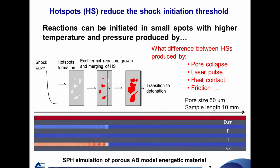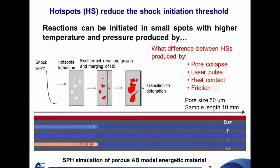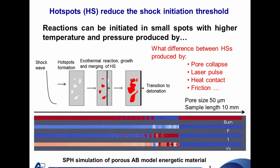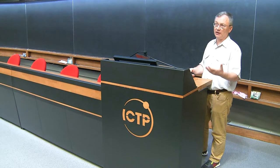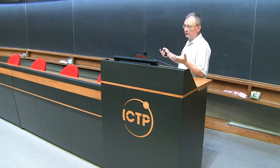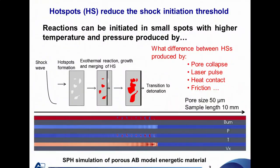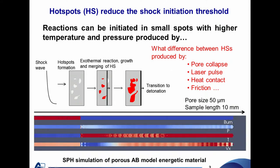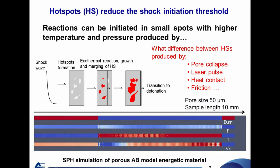Classification is important. For example, pore collapse will lead to one type of hot spot, but laser heating will provide another. Laser heating may produce a high-temperature hot spot, while pore collapse produces lower temperature but high pressure — quite different conditions. The critical condition for whether a hot spot dies or expands infinitely will depend on its class or type.